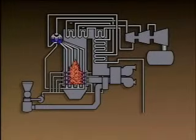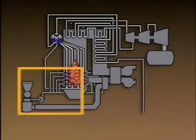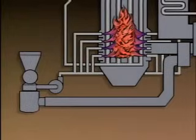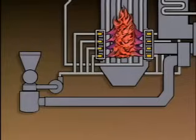A boiler's fuel system consists of components that prepare the fuel, supply the fuel to the boiler, and burn the fuel. Let's take a look at a simplified illustration of the fuel system for a coal-fired boiler. This fuel system includes a pulverizer, a coal feeder, a primary air supply, an exhaustor, burners, and a secondary air supply.